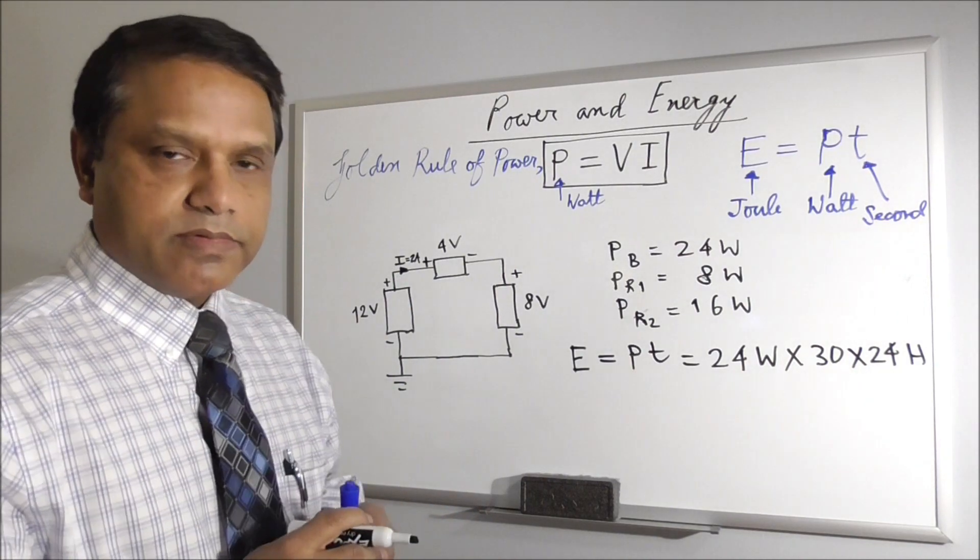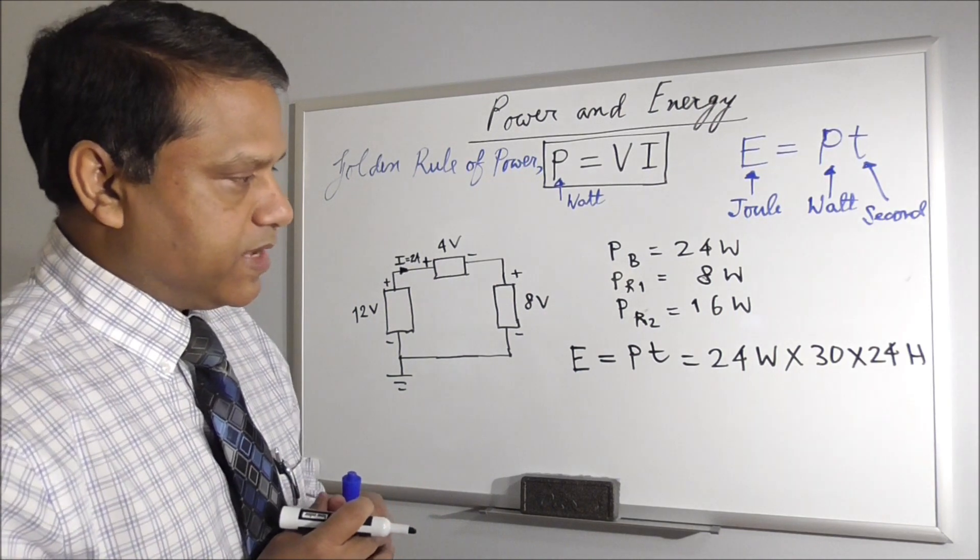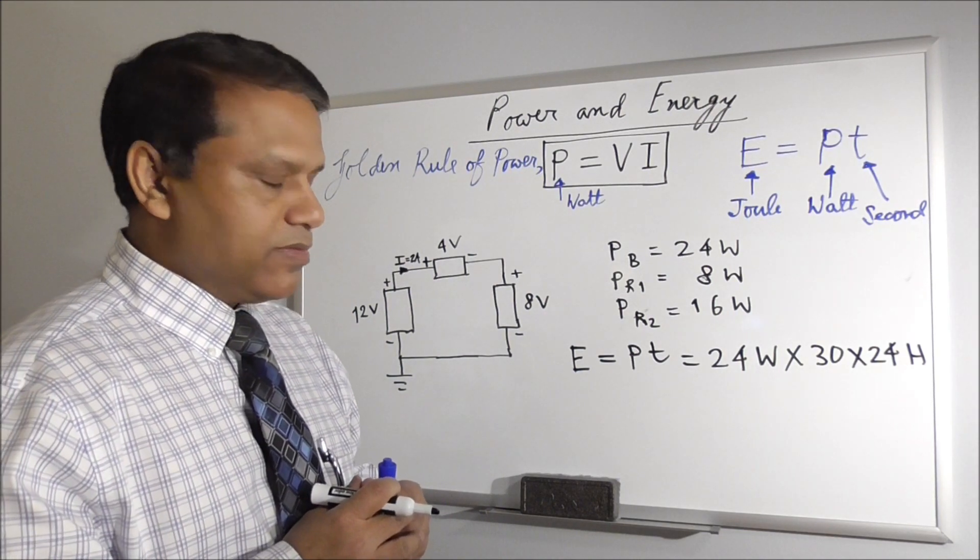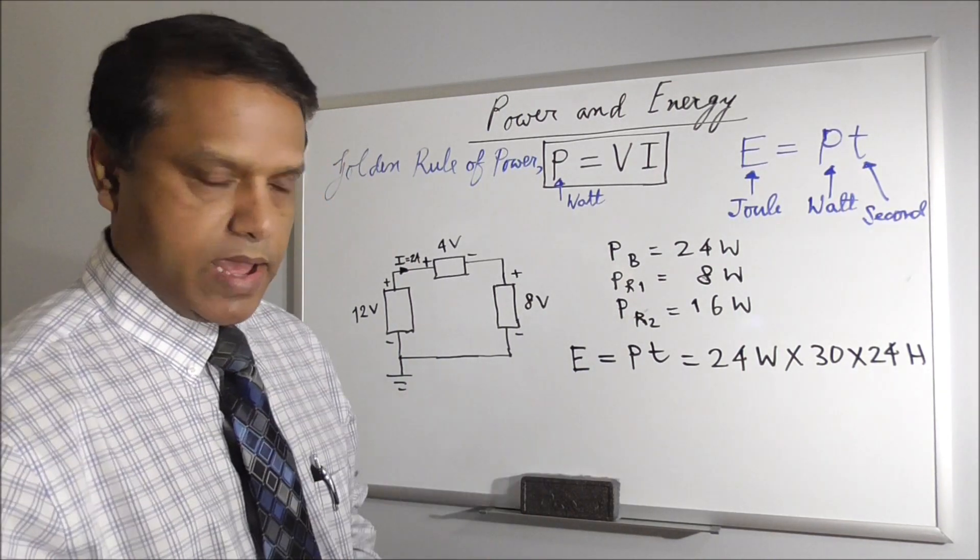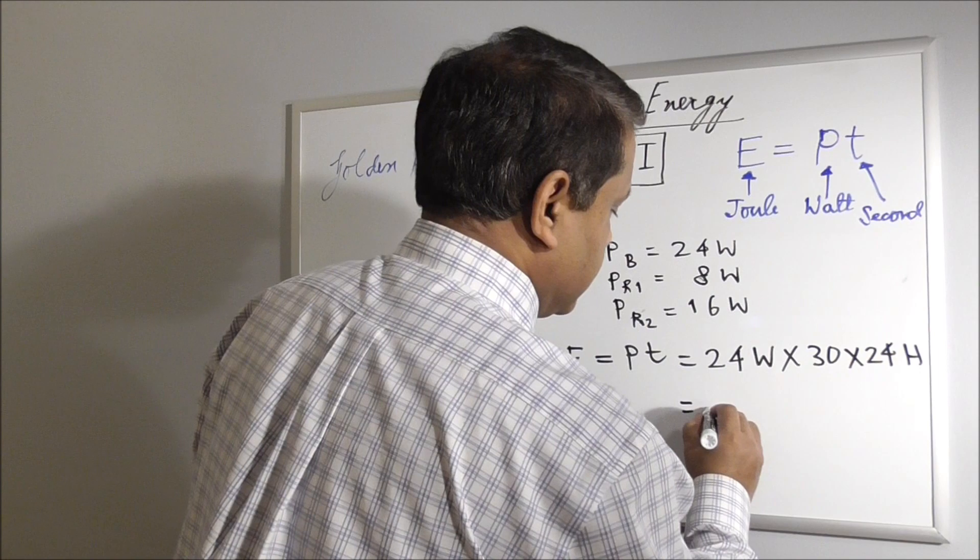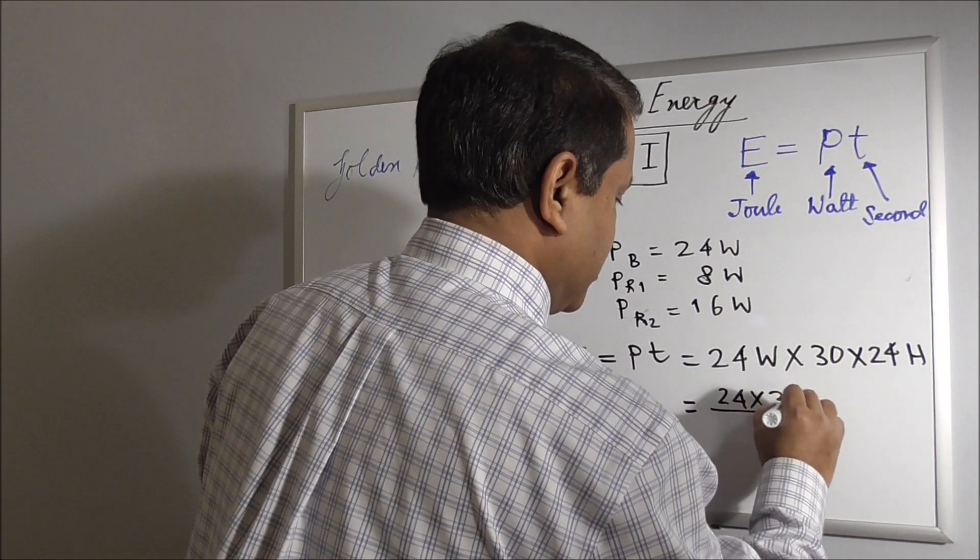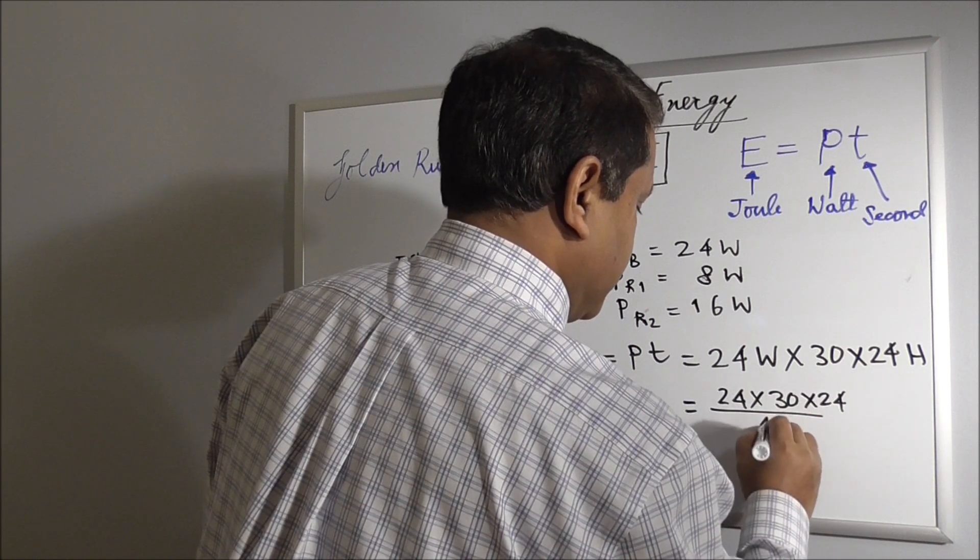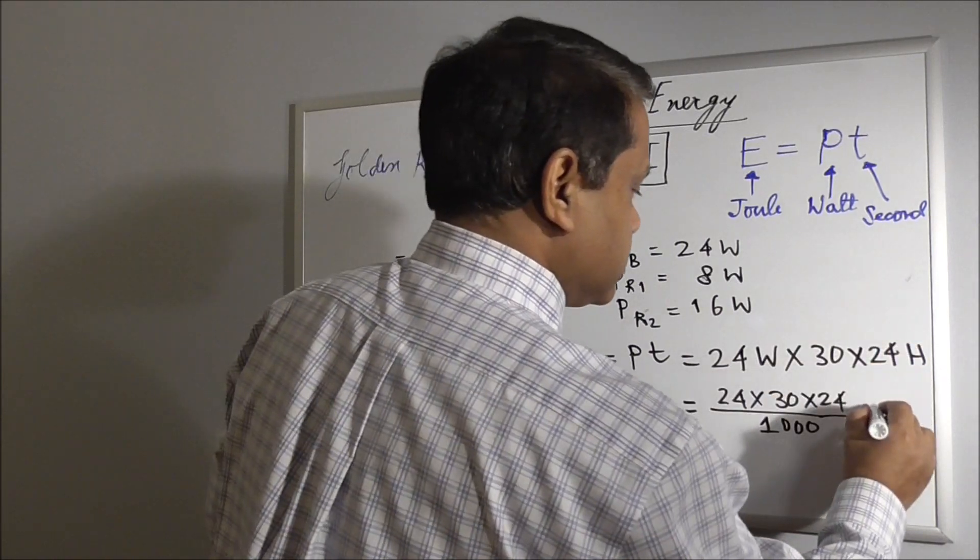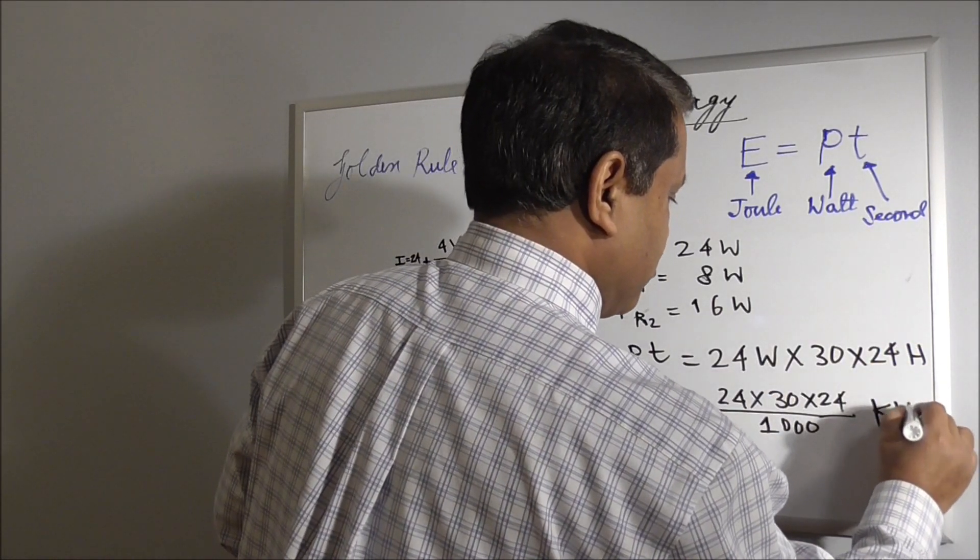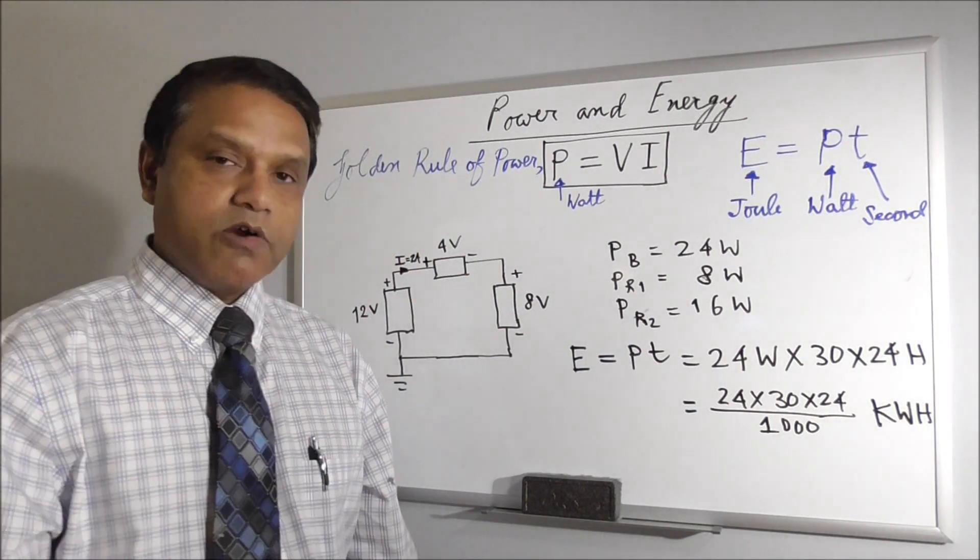So we have this many watt hour. But unit of power for household power consumption is kilowatt hour. That means you have to divide it by 1,000. Kilo means 1,000. How many thousand watt hour we have? To find that out, we divide this by 24 times 30 times 24 divided by 1,000. It was watt hour, now it is kilowatt hour. And that's the unit for household power.